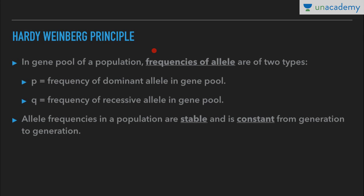Hardy-Weinberg principle. In the gene pool of a population, a gene pool is the total genes and their alleles in a population. If we talk of the gene pool of a population, the frequencies of alleles are of two types: dominant and recessive. P represents the frequency of the dominant allele in the gene pool, while Q represents the frequency of the recessive allele.